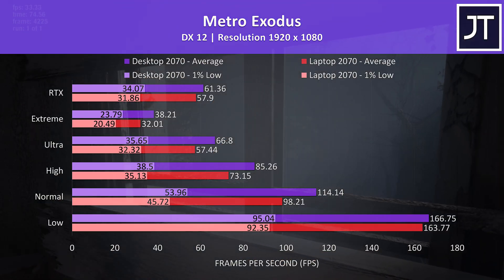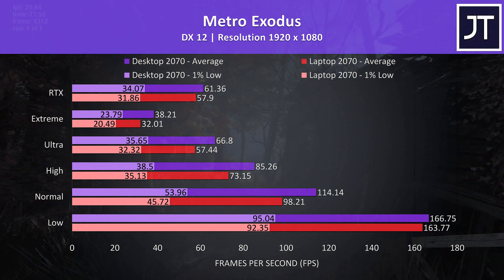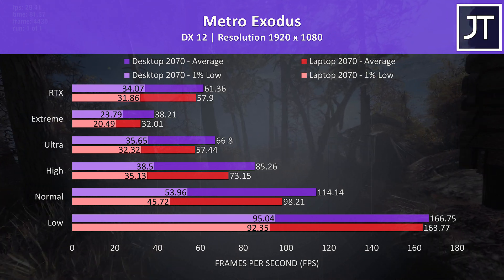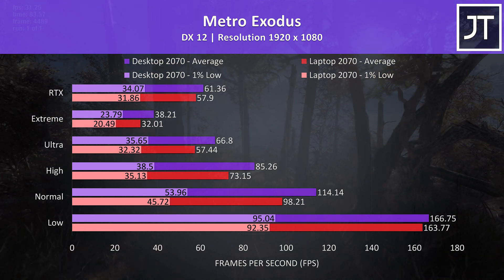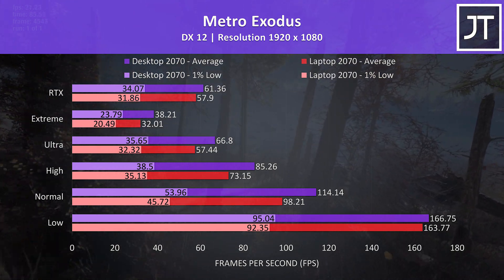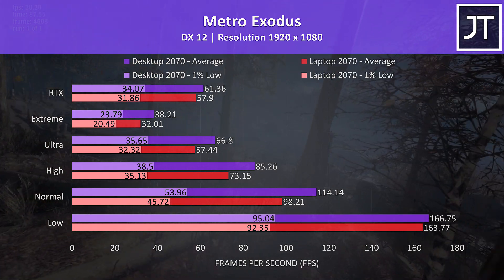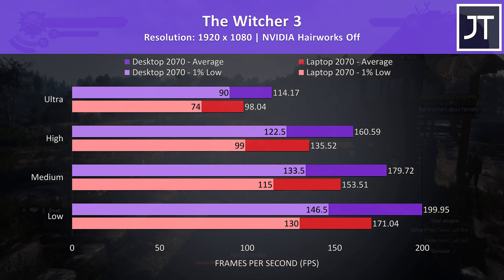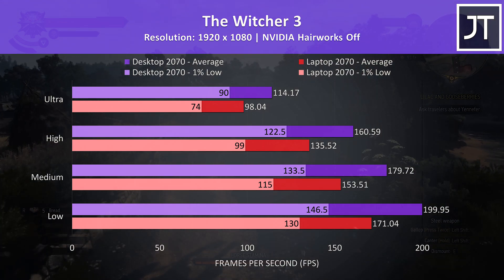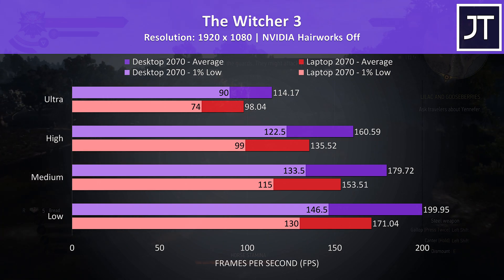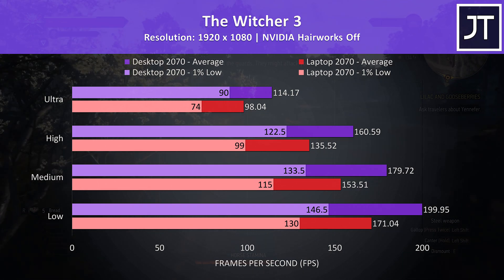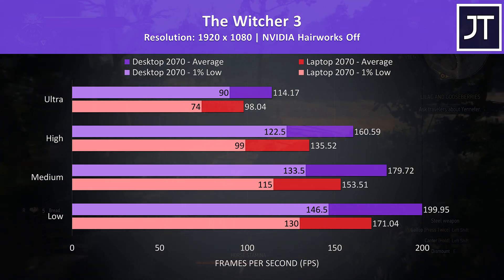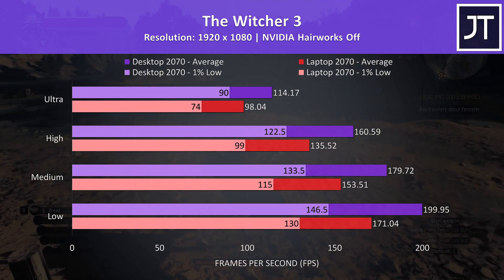Metro Exodus was also tested using the game's benchmark, and there was an above-average boost from the desktop 2070 at the highest extreme preset, reaching 19% higher average FPS. With the RTX preset enabled, it was just 6% faster. The Witcher 3 actually saw a bigger difference at the low setting preset, where the desktop was 17% ahead in average FPS, and at the highest ultra setting preset the desktop was 16.5% ahead — most other games were closer together at the lowest settings, which wasn't the case here.